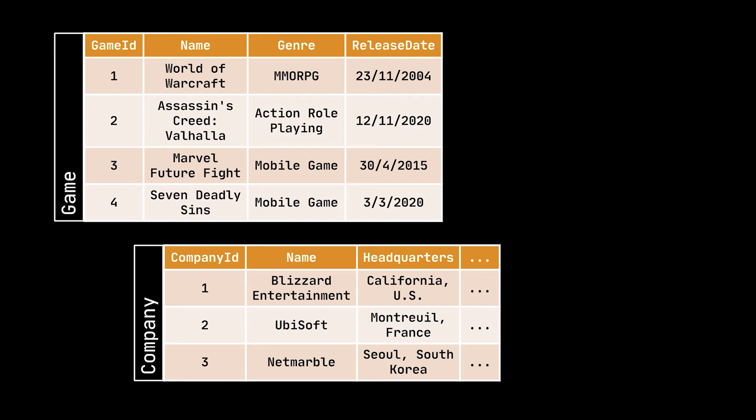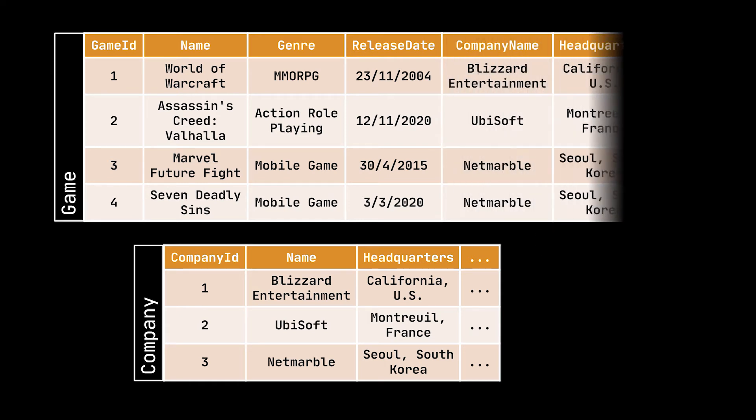Let's take the game and company tables as an example. In these tables we have the game ID column and the company ID column. These columns are automatically generated and are respectively the primary keys of their tables. Every game is developed by one and only one company.